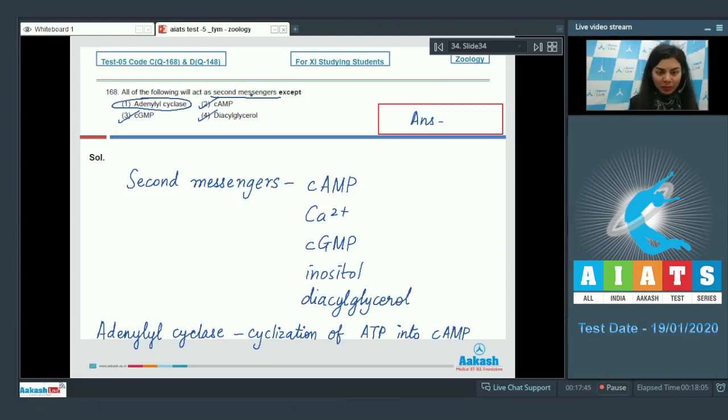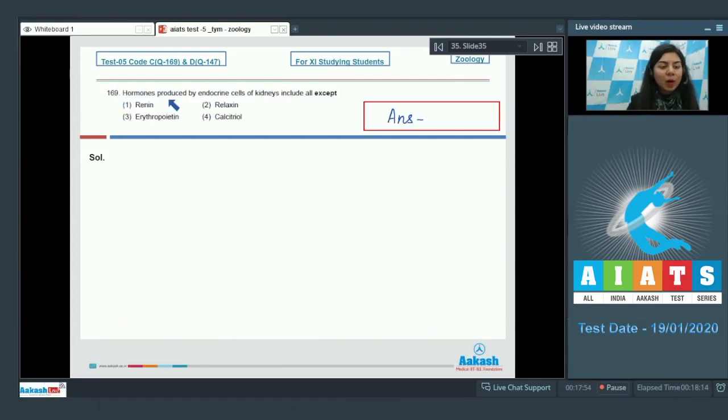Question 169: Hormones produced by endocrine glands of kidney include all except renin, relaxin, erythropoietin, or calcitriol. Among the given options, renin, erythropoietin, and calcitriol are released by endocrine portion of kidneys, whereas option number two, relaxin, is secreted by placenta.